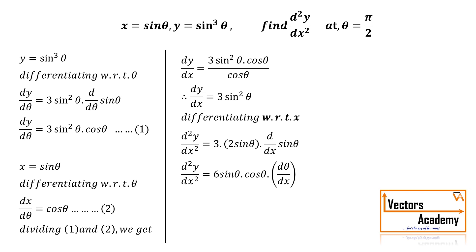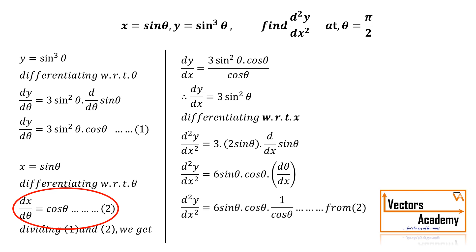Now what is dθ by dx? If you look at equation 2, we have its value already. Equation 2 is dx by dθ, so just taking its reciprocal we will get dθ by dx as well. Substituting that value from equation 2 and simplifying, I will get the second order derivative as 6 sin θ.